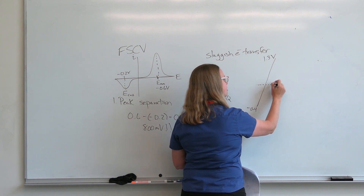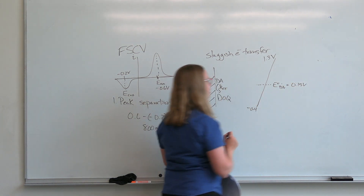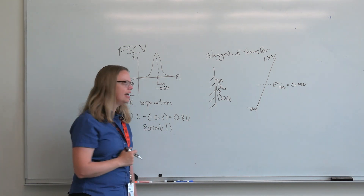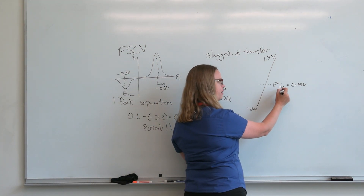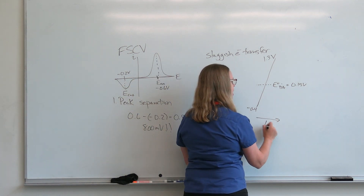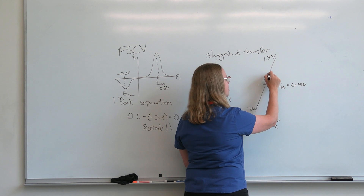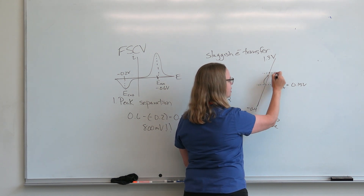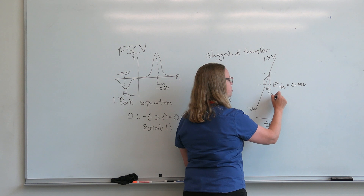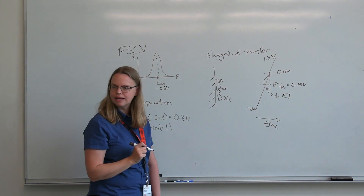Let's say E0 for dopamine is approximately 0.15 volts. As we go up in potential, it's thermodynamically possible to transfer an electron. But remember, this axis is time. So I could start to transfer an electron here, but by the time the electron actually gets transferred, I may be further along in the scan. There's some given delta-T that it takes to do the electron transfer, and by the time I get there, the peak ends up looking like it's at 0.6V.